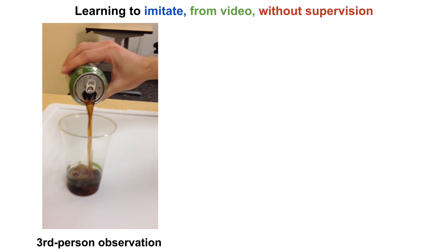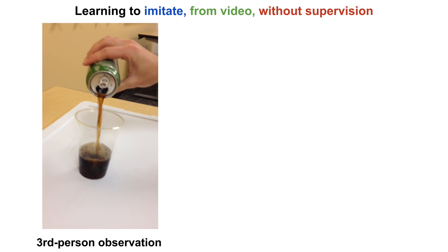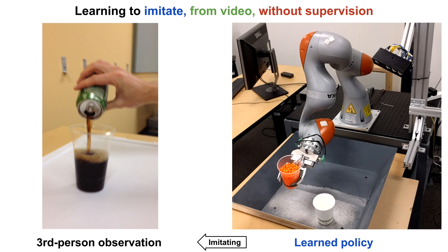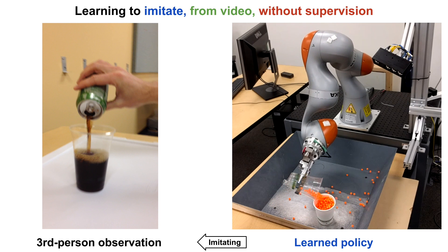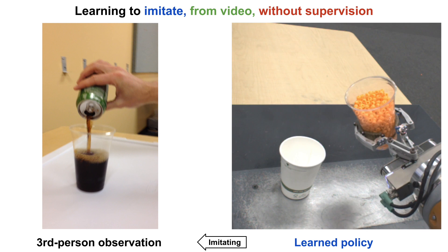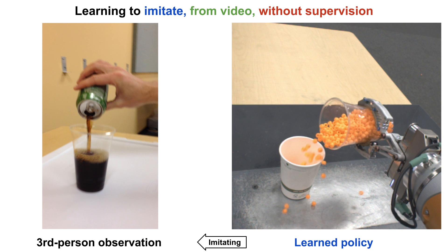In this work, robots can learn new tasks by watching a single third-person demonstration by a human, along with an unstructured and unlabeled collection of videos. Besides this single video demonstration, no supervision is provided to the system.